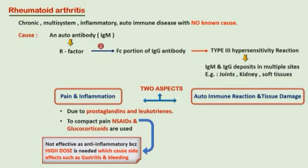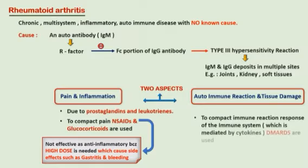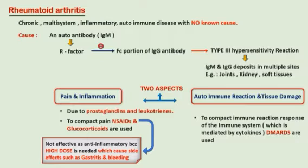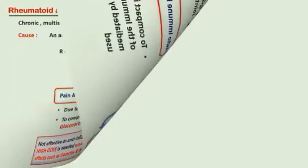Three drugs — etanercept by subcutaneous route, adalimumab by subcutaneous route, and infliximab by subcutaneous route — act as disease-modifying anti-rheumatoid drugs by blocking the action of TNF alpha. These three drugs can also cause the activation of latent tuberculosis.